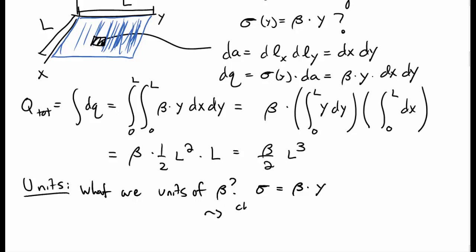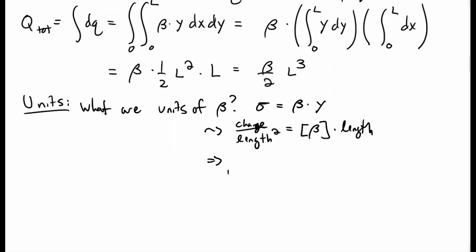We were told the surface charge density sigma is equal to beta times y. We could use this to determine the units of beta. So, sigma has units of charge per area, or charge per length squared. Beta, we don't know what their units are. And y has units of length. So, this tells us that beta must have dimensions of charge per length cubed.